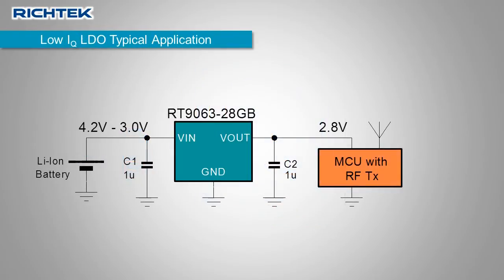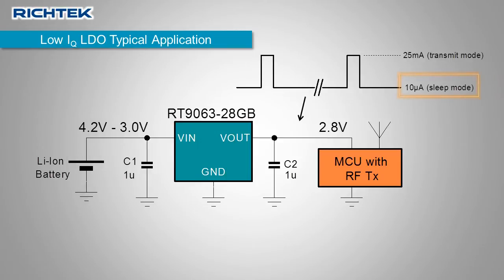Here is a typical battery powered application where a microcontroller periodically sends out data via an RF link. In order to ensure long battery life, the microcontroller is in sleep mode most of the time, consuming only 10 microamps.